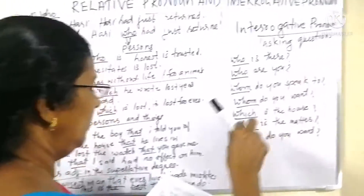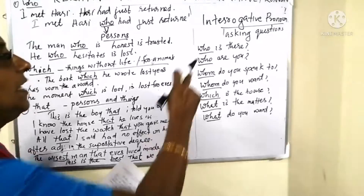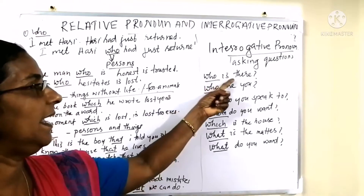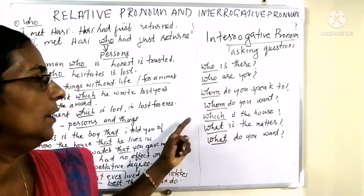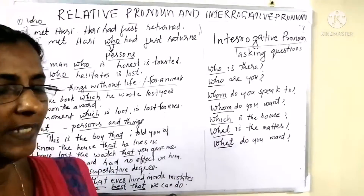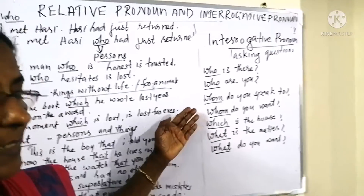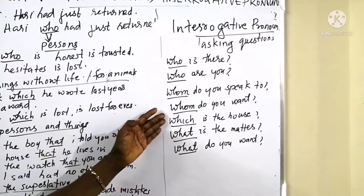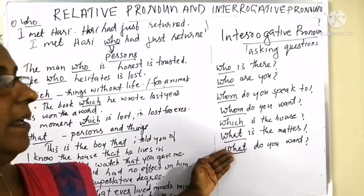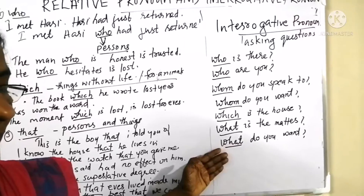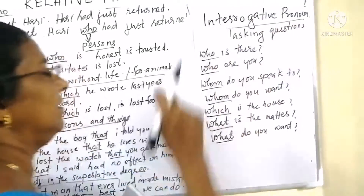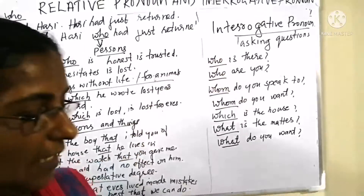Interrogative pronouns. What is an interrogative pronoun? It is a pronoun used for asking questions. Examples: Who is there? Who are you? Whom do you speak to? Whom do you want? Which is the house? What's the matter? What do you want? All these pronouns are similar in form to relative pronouns, but their function is different. Relative pronouns join clauses, whereas interrogative pronouns are used for asking questions. That is the difference between relative pronouns and interrogative pronouns.